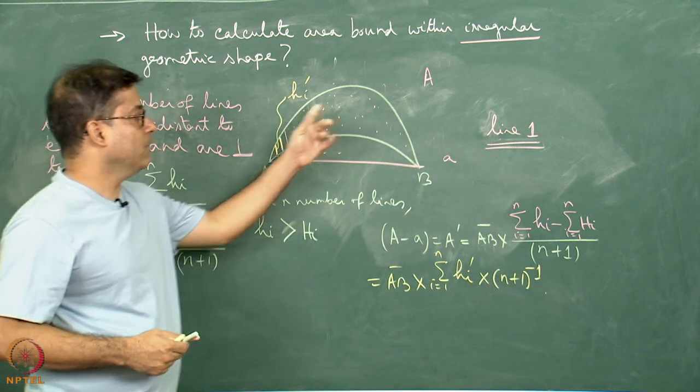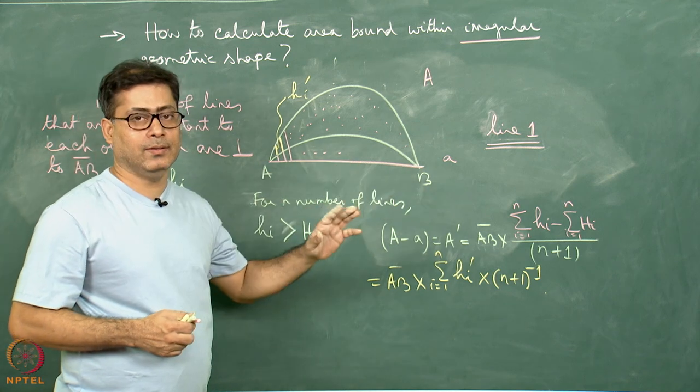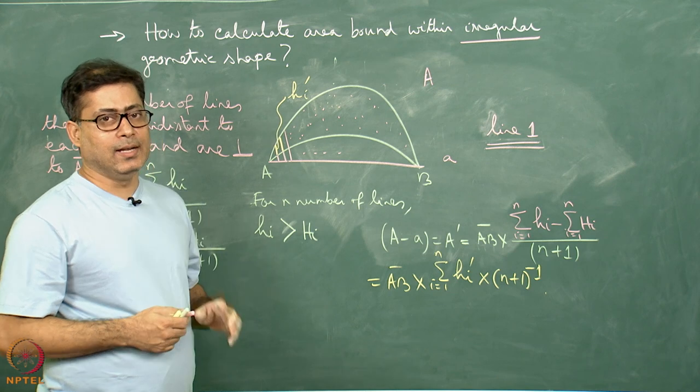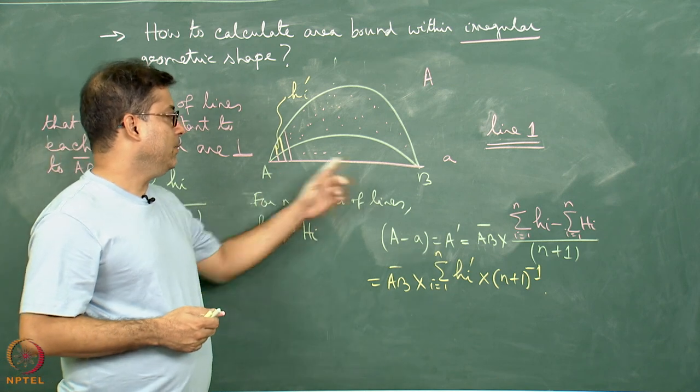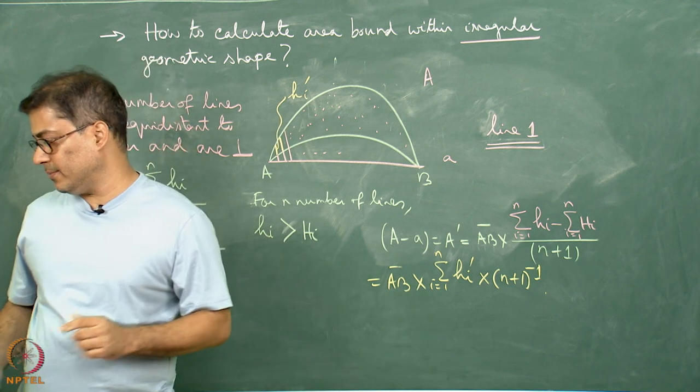So here what do I get? This area is given by AB length multiplied by (Σh_i')/(n+1), where i runs from 1 to n. So in this way, this irregular geometry can also be calculated. Now how I am choosing AB line? This can vary from person to person. Let me show you how the AB line can be chosen differently, yet the same result can be obtained.